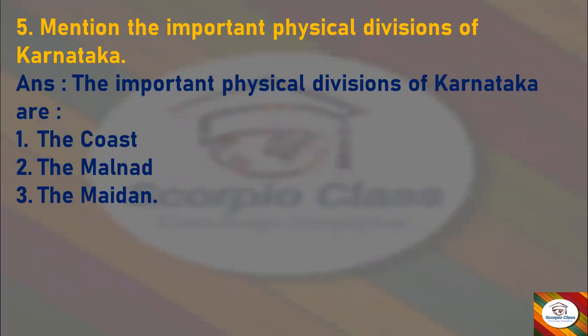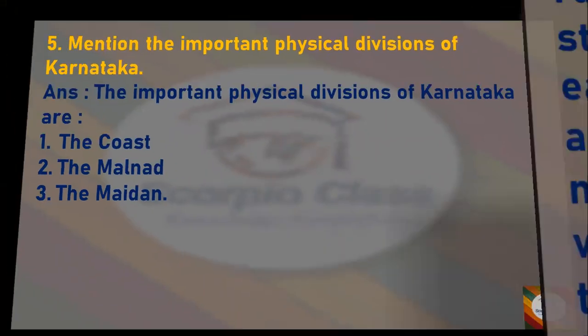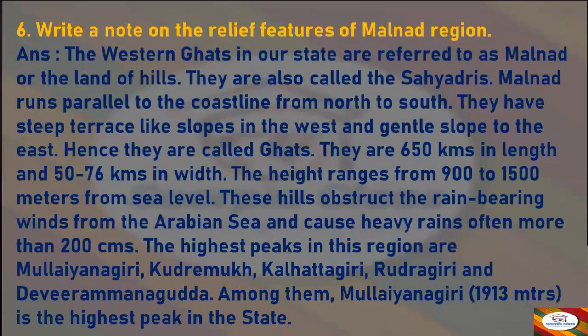Next: Mention the important physical divisions of Karnataka. The important physical divisions of Karnataka are the Coast, the Malnad, and the Maidan. Next: Write a note on the relief features of the Malnad region. Answer: The Western Ghats in our state are referred to as Malnad, or the land of hills. They are also called the Sahyadris. Malnad runs parallel to the coastline from north to south.